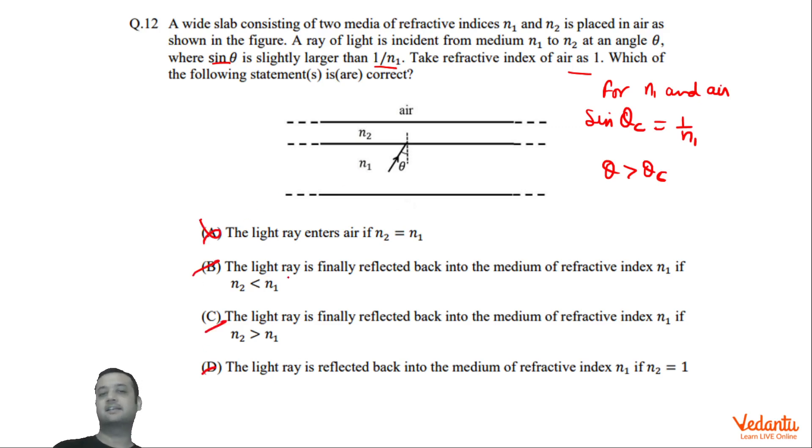So we can say that A is wrong. B, C, D are right. Ray will be reflected in the medium N1 if N2 is less than N1, if N2 is greater than N1 - for any case it will be reflected back. So I hope you would have understood the solution. That's it. Thank you.